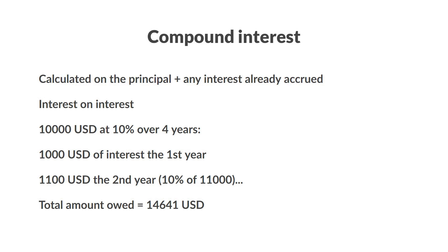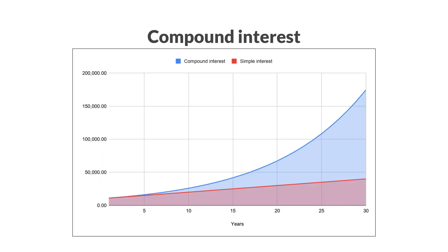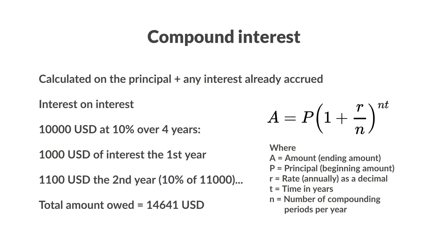The additional $641 might not seem like much, but bear in mind that this is a fairly short-term loan — only 4 years. Most big loans in our life are repaid over long periods of time, stretching up to 30 years for mortgages. Take a look at how big a difference this makes over a 30-year period. The total amount owed would more than quadruple: simple interest sums up to $40,000, while compound interest compounds to a whopping $174,494.02. That's a major difference, and you can calculate compound interest using this formula.